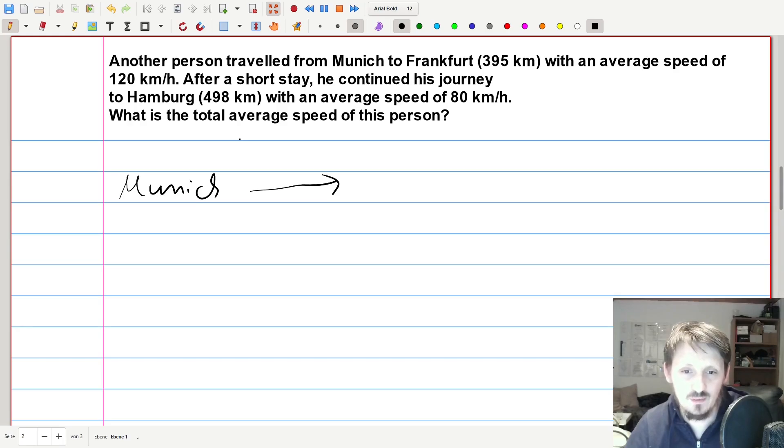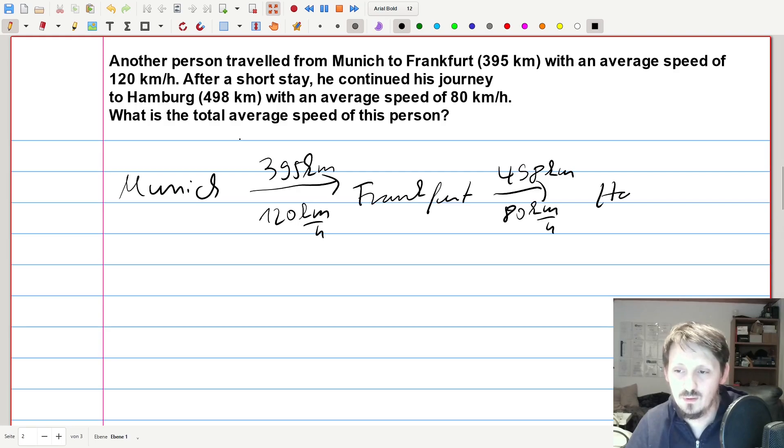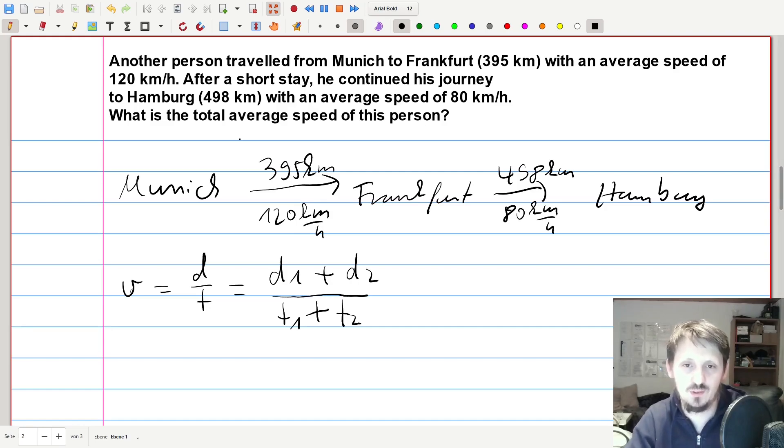You can try to make a small sketch for yourself to understand it in a better way. So as I said, in this case, we had a person who is going actually from Munich, and there he travels 395 km with a speed of 120 km per hour to Frankfurt, and from there he traveled again 498 km with a speed of 80 km per hour up to Hamburg. And now we will use the same formula which we have also used before, so the average speed is in this case D divided by T, but now we have two distances, first from Munich to Frankfurt which we call d1, and then the second one from Frankfurt to Hamburg which we call d2, and we have to divide this then by t1 plus t2, the timing for d1 and the timing for d2.